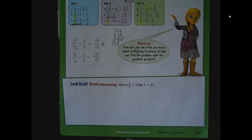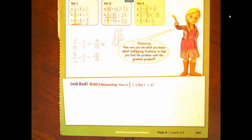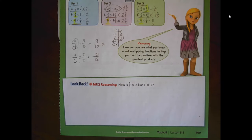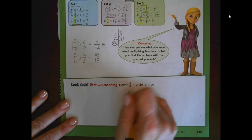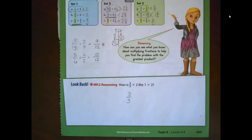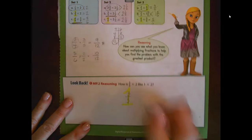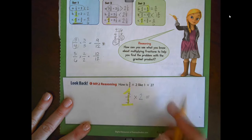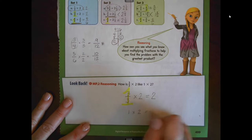How is three-thirds times two like one times two? Three-thirds times two is going to give us the same product as one times two, and that is because three-thirds is a form of one. So if we multiply three-thirds times two, that is the same as saying one times two, and we get two — just like one times two equals two.